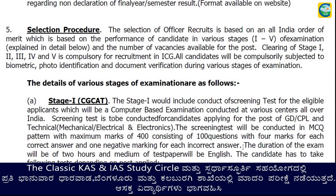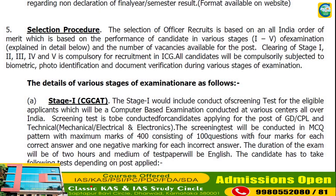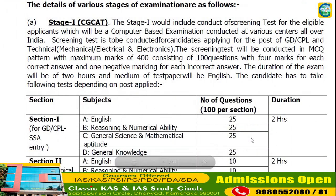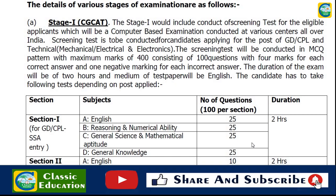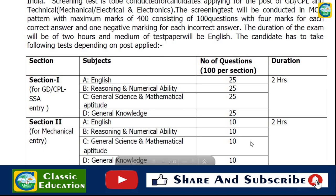Selection procedure: The selection of officer recruits is based on an all-India order of merit, based on the performance of candidates in various stages, Stage 1 to Stage 4 or 5 examinations. Stage 1 is a Computer Based Examination conducted at various centers all over India. The screening test is conducted for candidates applying for GD, CPL, Technical, Mechanical, or Electrical/Electronics posts. The screening test is in MCQ pattern with a maximum of 400 marks, consisting of 100 questions with 4 marks for each correct answer and 1 negative mark for each incorrect answer. Duration is 2 hours and the medium is English.